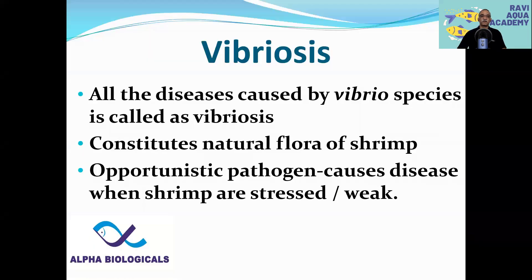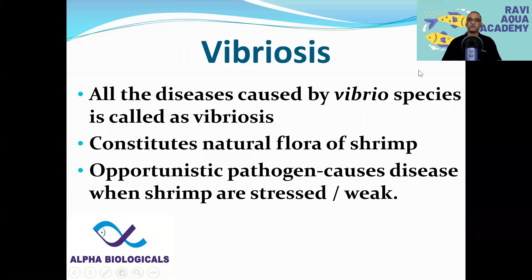So what is Vibriosis? All the diseases caused by Vibrio species are called Vibriosis. Vibrio is the natural flora of the shrimp. For example, if you get seed from a shrimp hatchery, you are stocking Vibrio along with it. In most cases, Vibrio is an opportunistic pathogen. Whenever the shrimp is stressed or weak for any reason, these Vibrio bacteria will proliferate and cause Vibriosis.